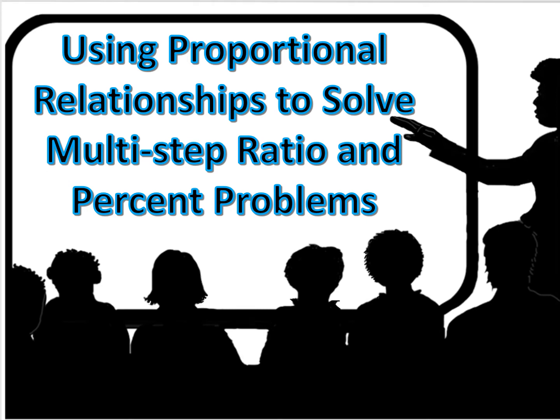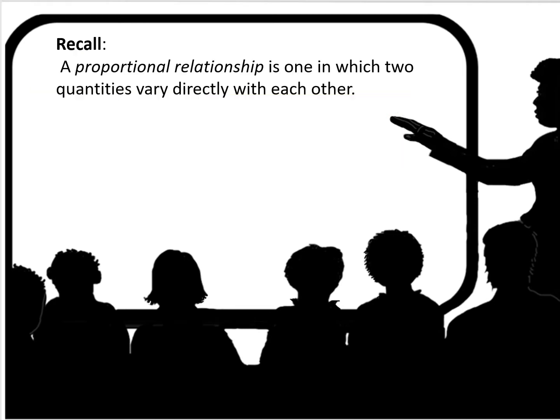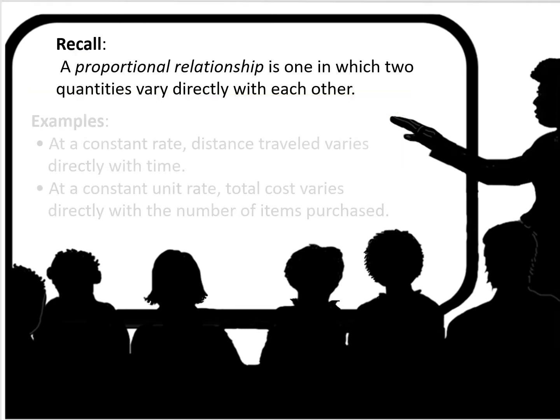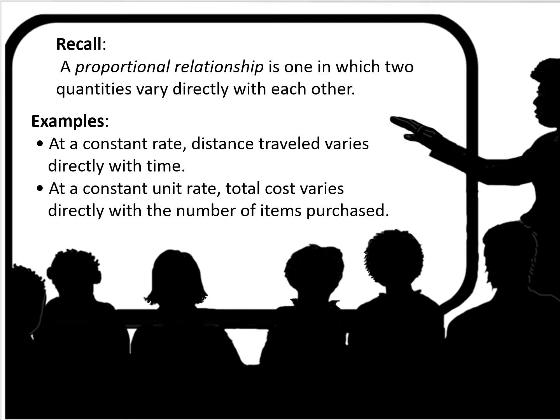This video is on using proportional relationships to solve multi-step ratio and percent problems. Recall that a proportional relationship is one in which two quantities vary directly with each other. Examples include: at a constant rate, distance traveled varies directly with time; and at a constant unit rate, total cost varies directly with the number of items purchased.